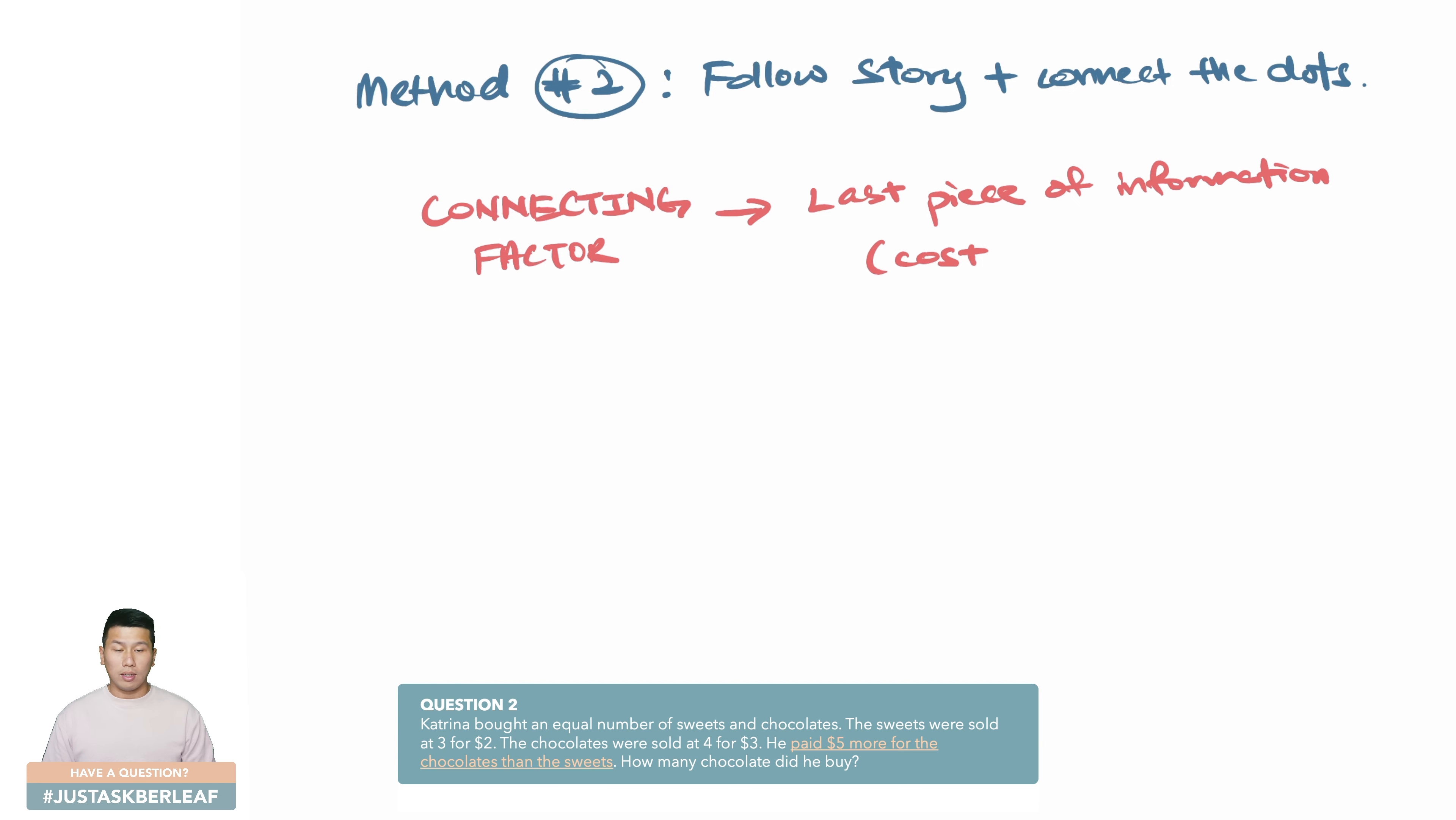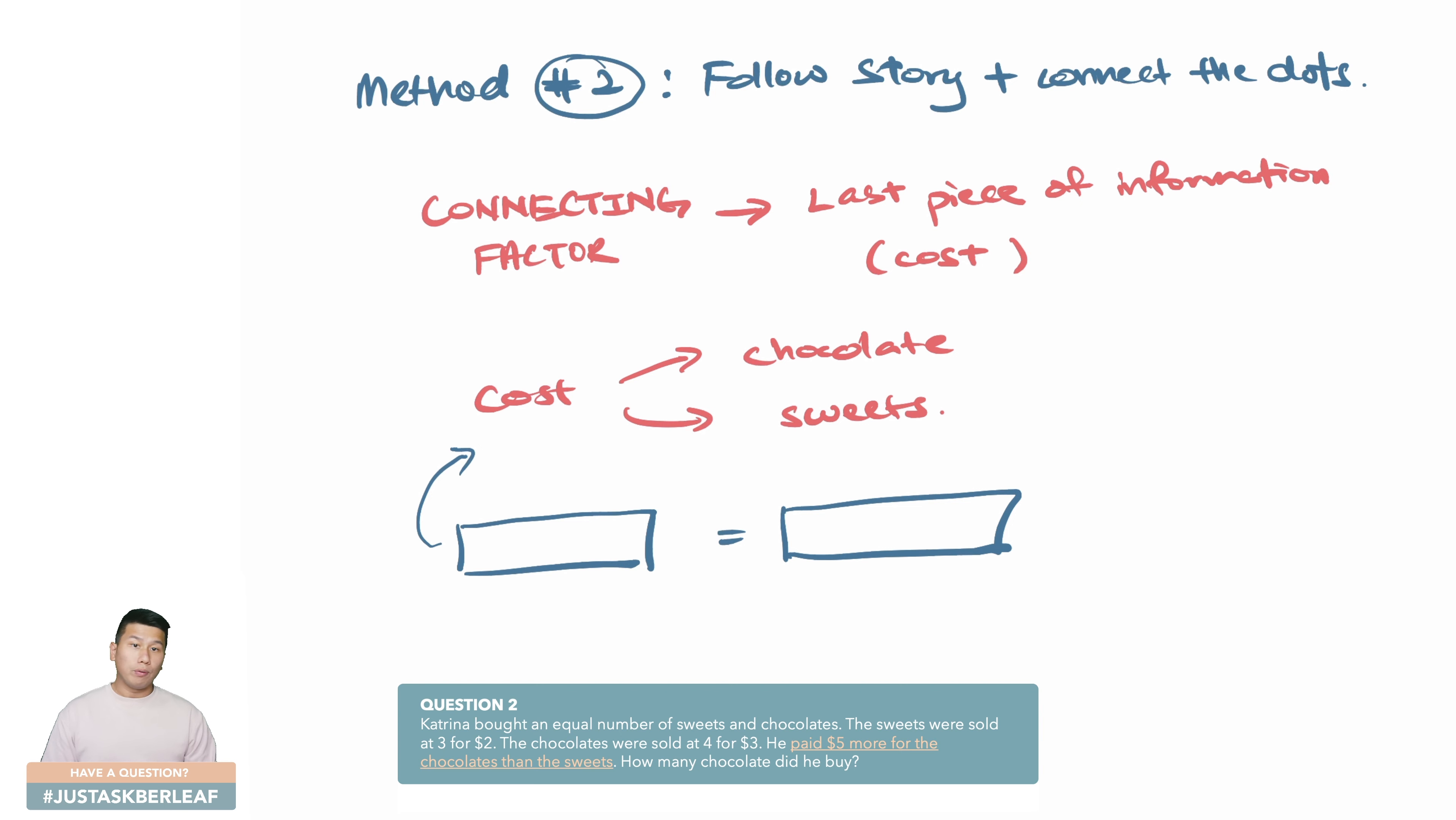In our question, as you can see, the last piece of information is the one that I highlighted here, and this can be interpreted as the cost of the item or the difference in cost. It's really optional as to what you choose to interpret it as, as long as it's relevant. I will choose to go with cost of items, and therefore it is actually a cost of item between that of chocolate or sweets. Remember that we are trying to form an equation, so it can be any of this. I will choose to go with cost of sweets.